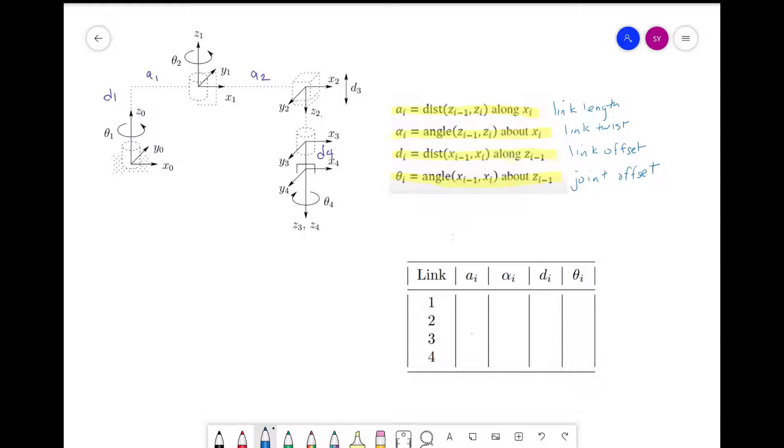Now we can create a table and fill in the joint parameters for the SCARA manipulator. We have five joints, which gives us four links. We create a table with links one to four and the parameters a_i, alpha_i, d_i, and theta_i. Now we can find the DH parameters.